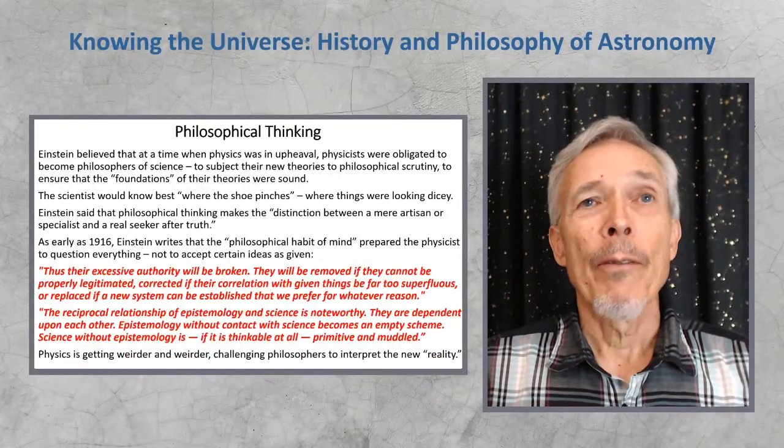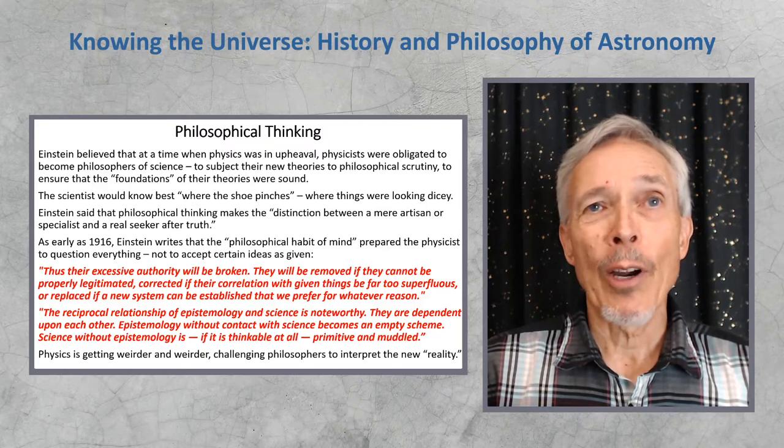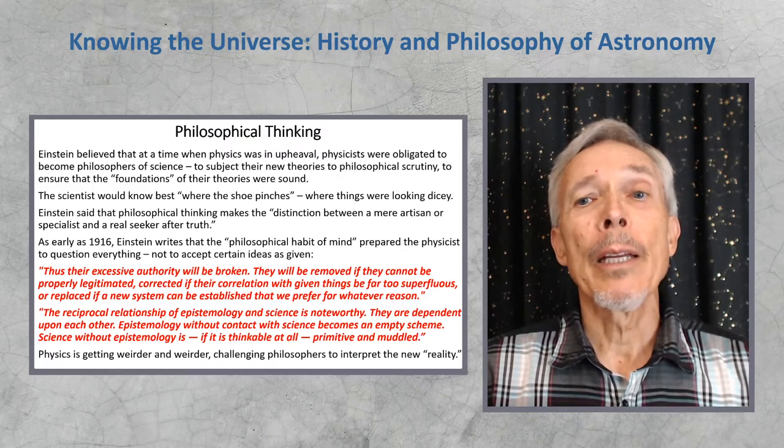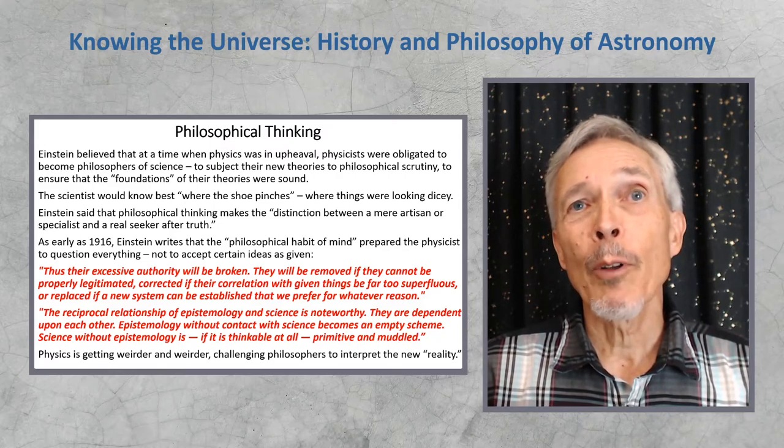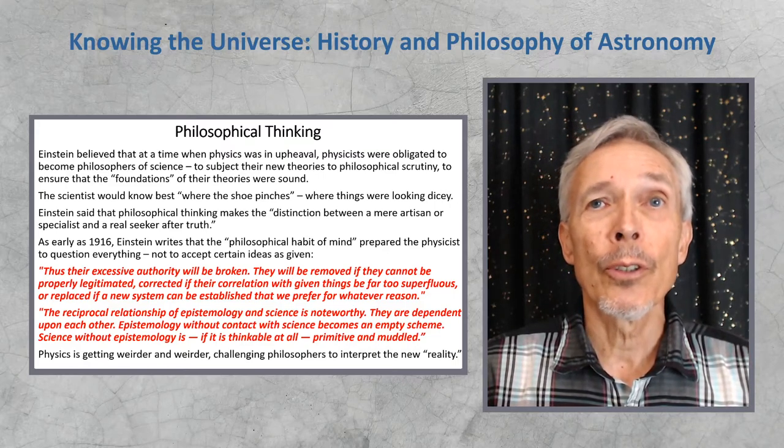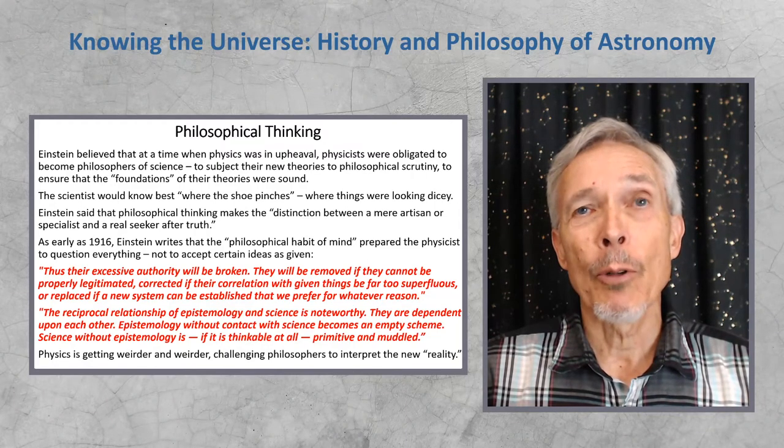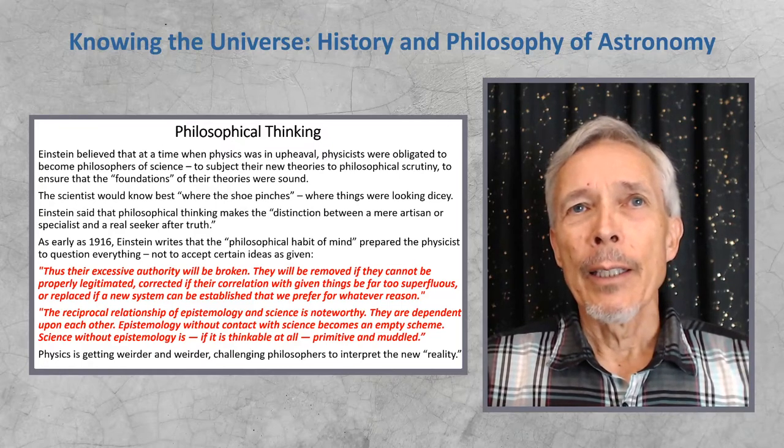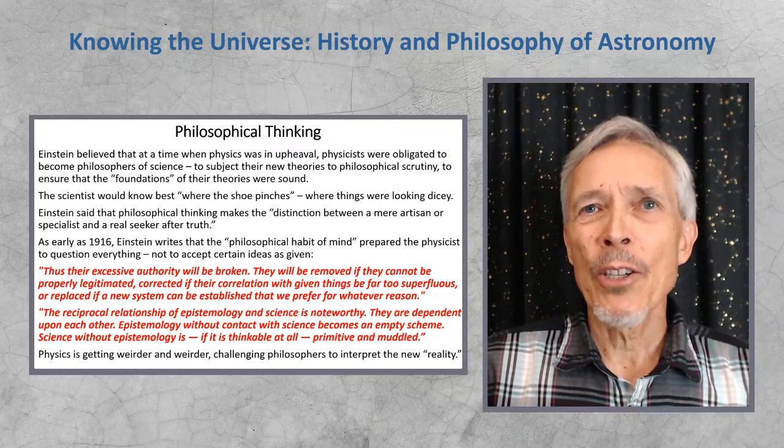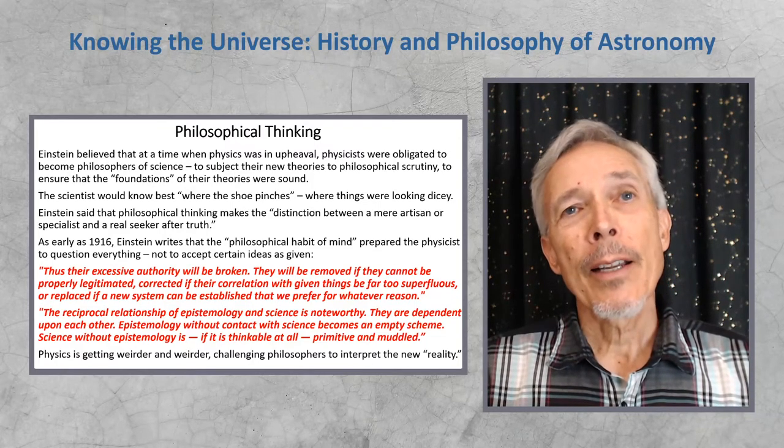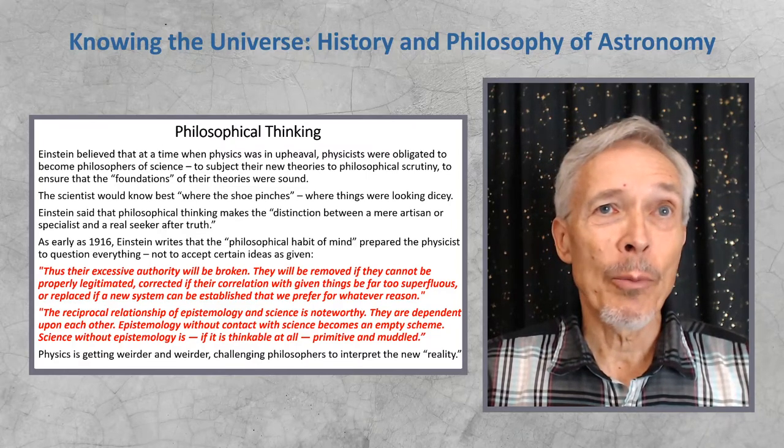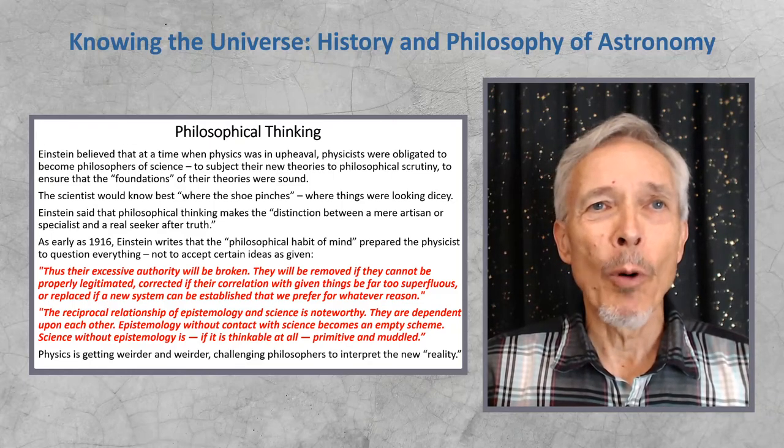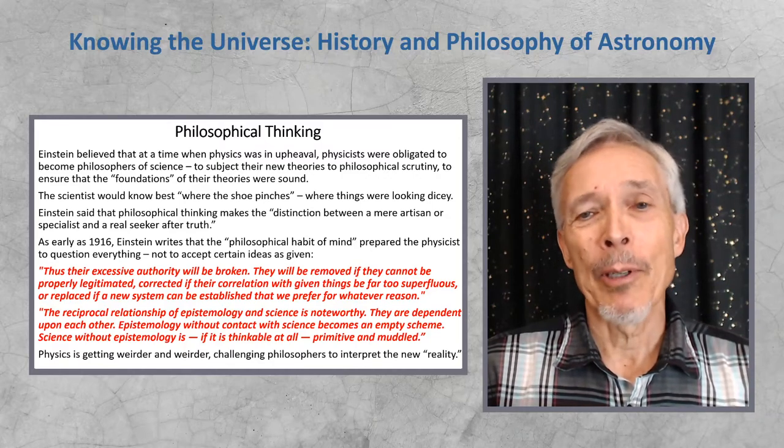So there's a lot of philosophical thinking involved in relativity, because these are not just abstract ideas. They apply to the real world. Einstein believed that at the time when physics was in upheaval, physicists were obligated to become philosophers of science, and so subject their new theories to philosophical scrutiny, to ensure the foundation of their theories were sound. Einstein was a complete fan of theory, and of philosophy. The scientists would know best, as he put it, where the shoe pinches, where things were starting to look tricky for the theory. Einstein said that philosophical thinking makes the distinction between a mere artisan, or specialist, and a real seeker after truth. Einstein really was a philosopher at heart, as well as a great physicist, and a pretty good mathematician as well.